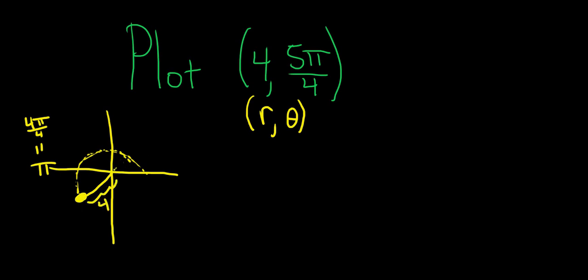If r was negative 4, you would go the other way. Okay, so now we have to convert this to rectangular.